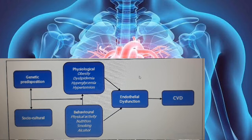The figure below demonstrates a proposed causal pathway for atherosclerotic conditions — this is the pathophysiology of atherosclerotic cardiovascular disease. At the base we have genetic predispositions and social-cultural factors, which lead to behavioral changes in the form of physical activity levels, nutrition, smoking, and alcohol. These in turn produce physiological changes like obesity, dyslipidemia, hyperglycemia, and hypertension. All these behavioral and physiological changes combined lead to endothelial dysfunction.